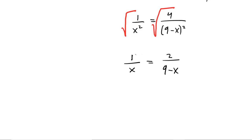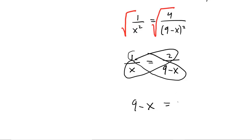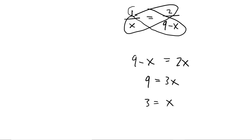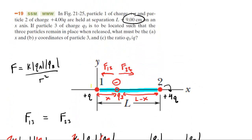Now we do cross multiplication: (9 minus x) times 1 gives (9 minus x), and cross multiplying the other way gives 2x. Adding x to both sides and dividing by three, we find x equals three centimeters. Part A asked for the x-coordinate of particle three — the answer is x equals three centimeters.